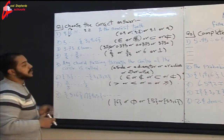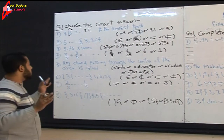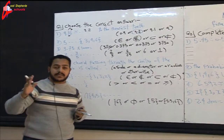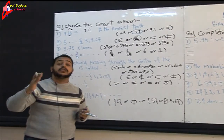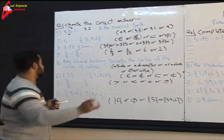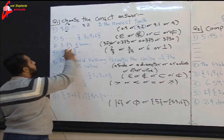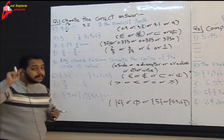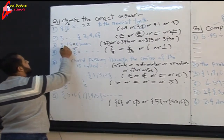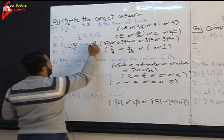Question three: 3.75 times 1000. When we multiply by 10, 100, or 1000, we move the decimal point to the right. We have three zeros, so we move the decimal point three places to the right. We only have two decimal places, so we insert a zero first, then move three places to the right. The answer is 3750.